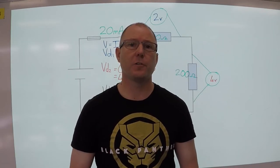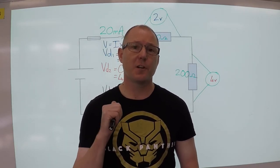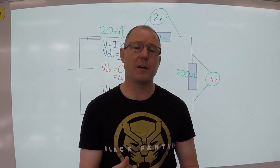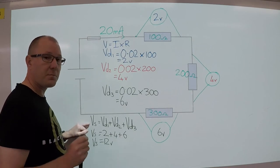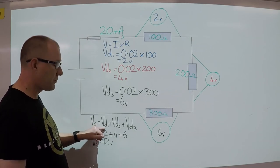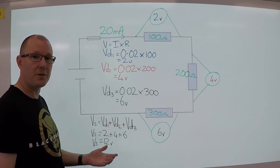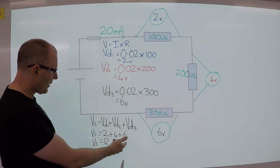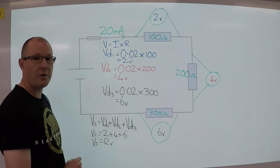Kirchhoff's voltage law states that the sum of all voltage drops equals the supply voltage. So with this example that we've just calculated, let's see how the formula works. The supply voltage is equal to voltage drop 1 plus voltage drop 2 plus voltage drop 3. So 2 plus 4 plus 6, we should have a supply voltage of 12 volts.